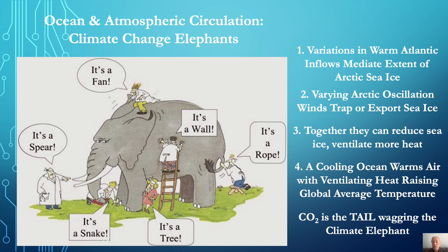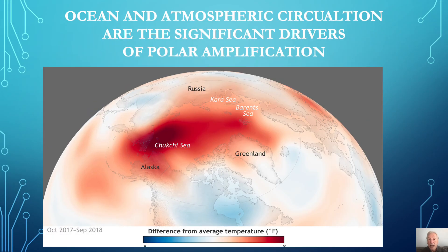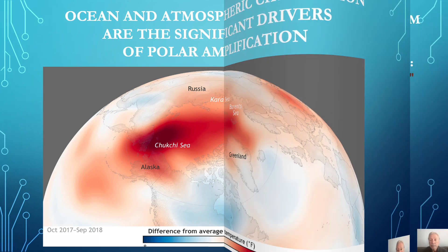Ocean and atmospheric circulation are by far the most significant drivers of sea ice changes and Arctic warming — the most significant drivers of the so-called Arctic amplification.